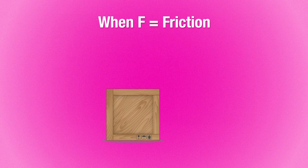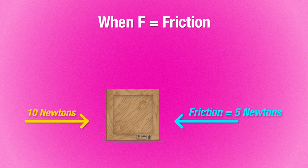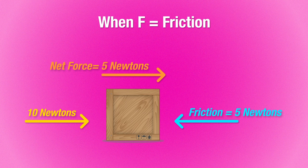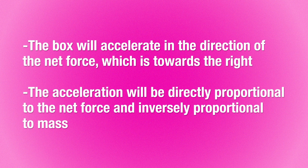Now for example, let's say you're pushing a box across a flat surface with a force of 10 Newtons to the right. And there's a frictional force of 5 Newtons pushing to the left, the net force on the box will be 5 Newtons to the right, which means the box will accelerate to the right with an acceleration that's proportional to the net force, or inversely proportional to the mass.